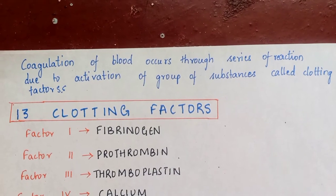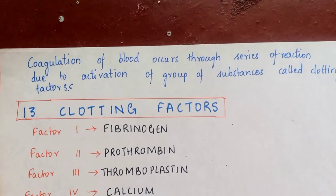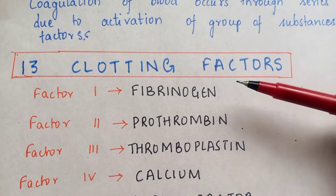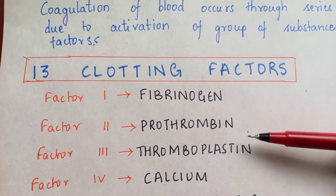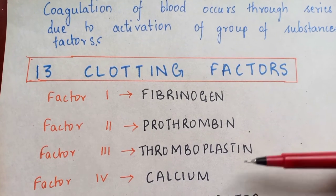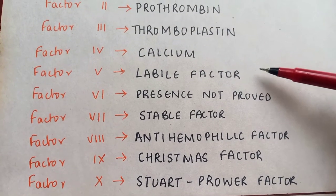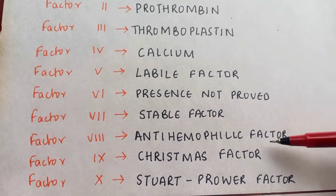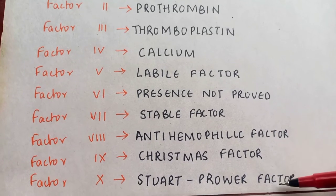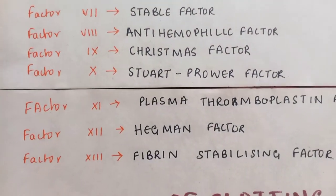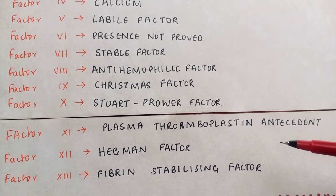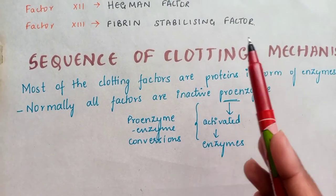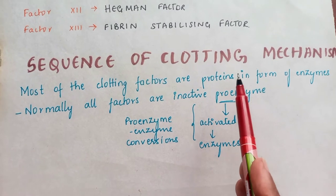Coagulation of blood occurs through a series of reactions due to activation of a group of factors. There are 13 factors: Factor 1 - Fibrinogen, Factor 2 - Prothrombin, Factor 3 - Thromboplastin, Factor 4 - Calcium, Factor 5 - Labile factor, Factor 6 - presence not yet proved, Factor 7 - Stable factor, Factor 8 - Anti-haemophilic factor, Factor 9 - Christmas factor, Factor 10 - Stewart-Prower factor, Factor 11 - Plasma thromboplastin antecedent, Factor 12 - Hageman factor, Factor 13 - Fibrin stabilizing factor.